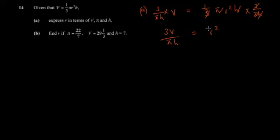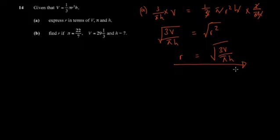To get r, take the square root of both sides. Rearranging: r = √(3V/πh). This is your change of subject formula and your final answer.